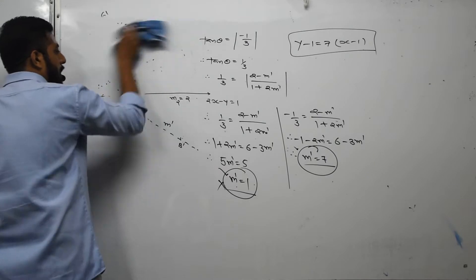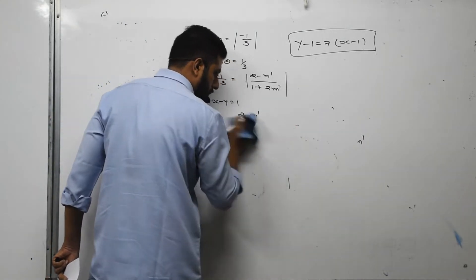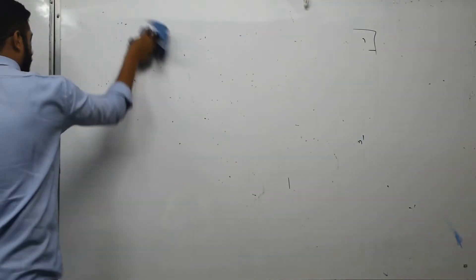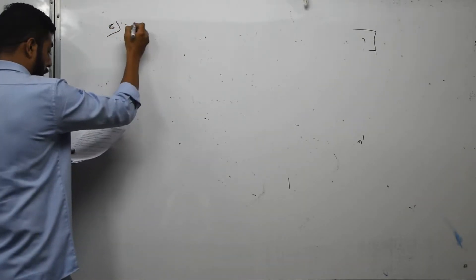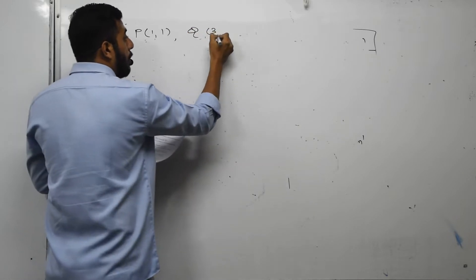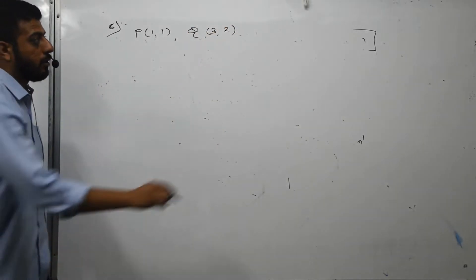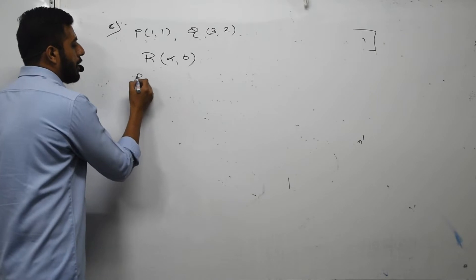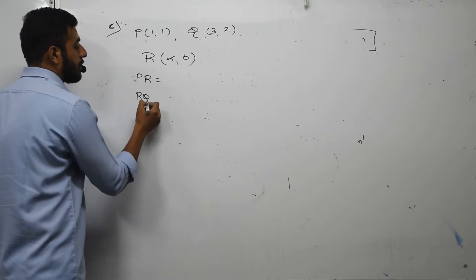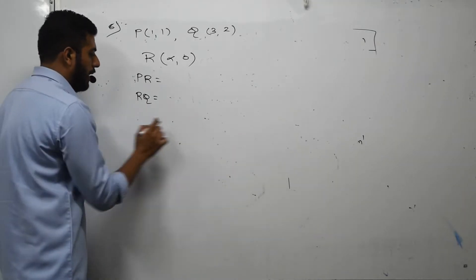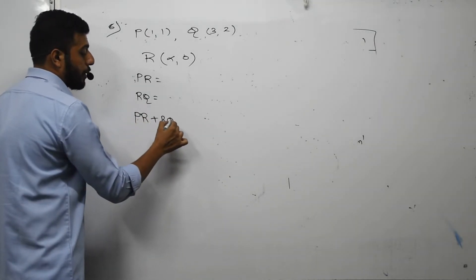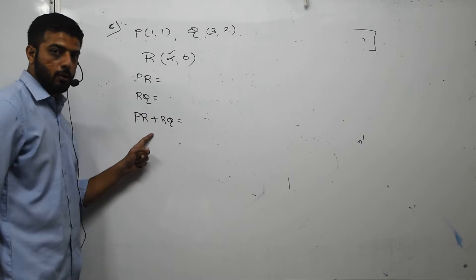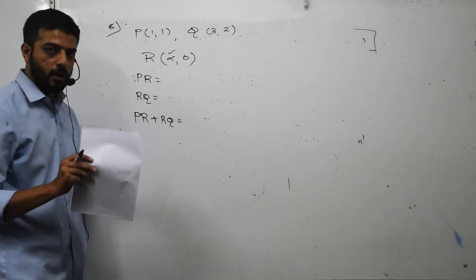Question number 8. Points P, R, Q are given where R lies on the X-axis. Let R be the point (alpha, 0). The first method is to find distances PR and RQ using the distance formula, express PR plus RQ as a function of alpha, then apply the first derivative equal to zero to get the value of alpha — though this is a very lengthy method.